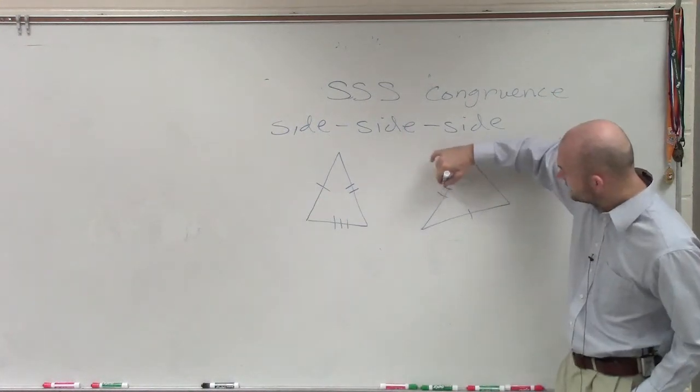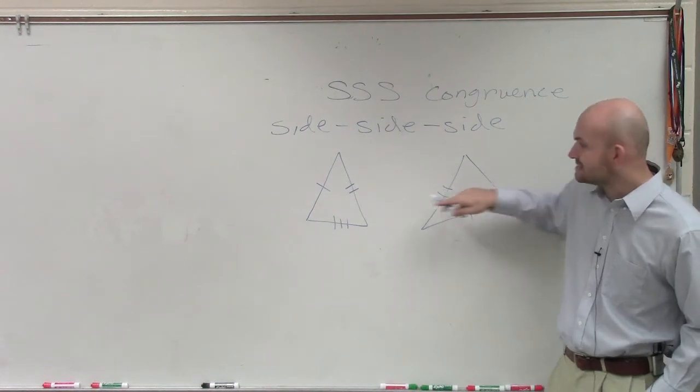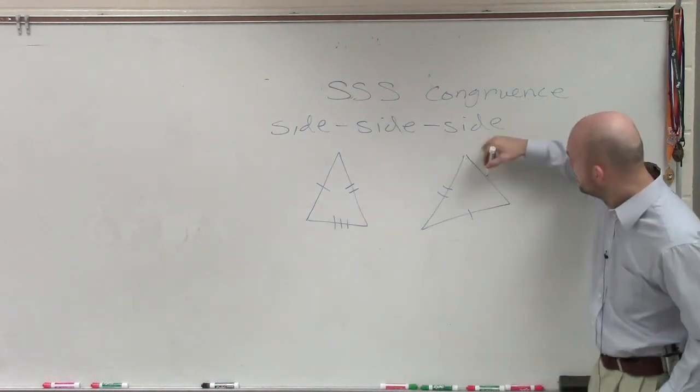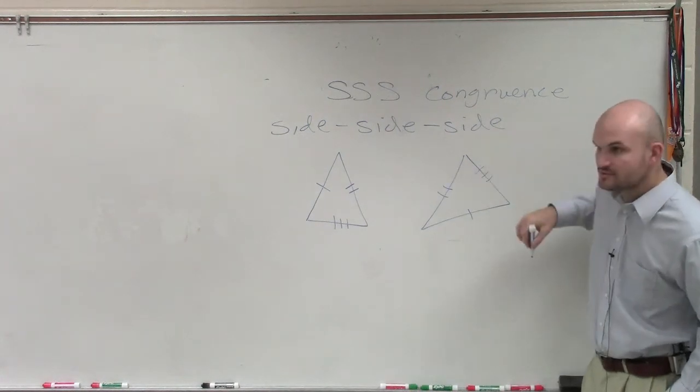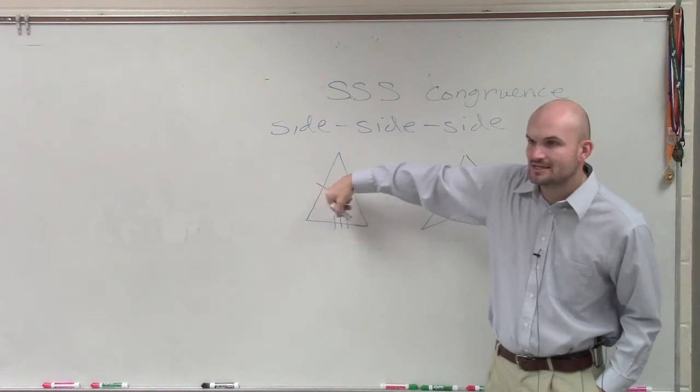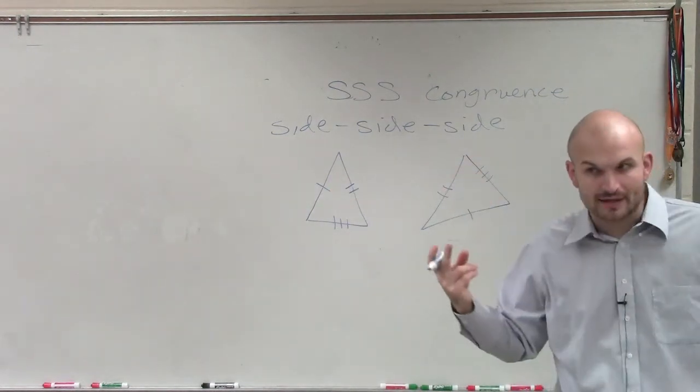This side that has two tick marks, that has the exact same length as that length on that triangle. And this side has three tick marks. That means it has the exact same length as this triangle.